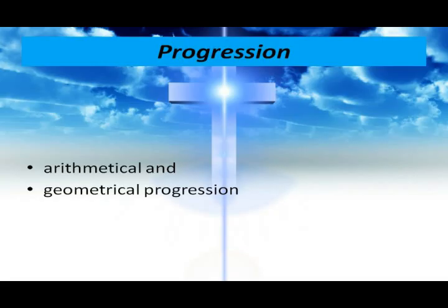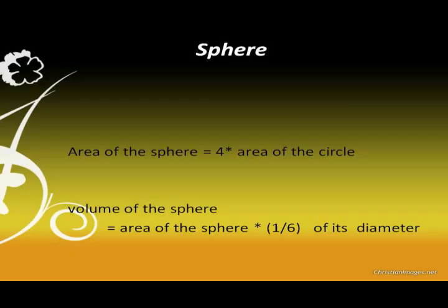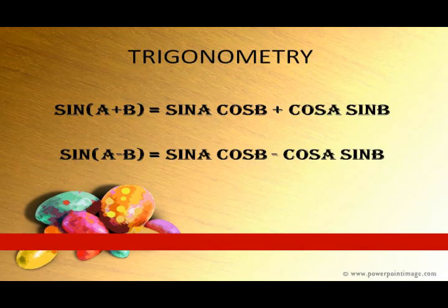On progressions, he was aware of arithmetical and geometrical progressions and explained examples. Regarding the sphere, he formulated the area and volume of a sphere: the area of a sphere equals four times the area of a circle; the volume of a sphere equals the area of the sphere multiplied by one-sixth of its diameter. In trigonometry, Bhaskaracharya showed more interest and gave results including: sin(A+B) = sin A cos B + cos A sin B, and sin(A−B) = sin A cos B − cos A sin B.